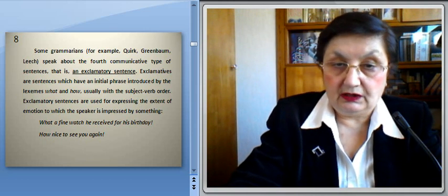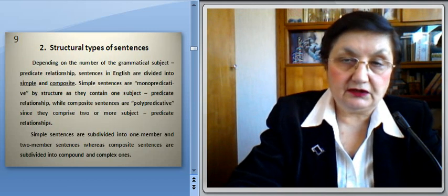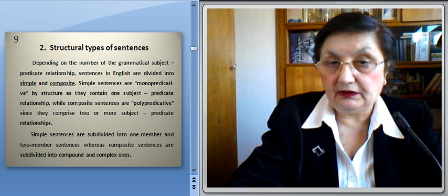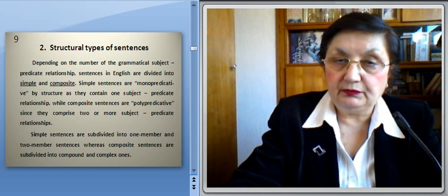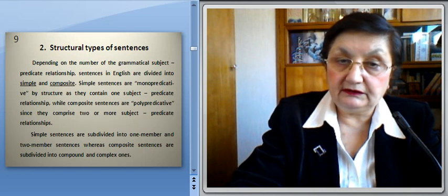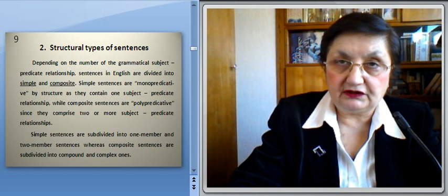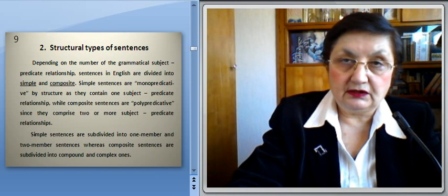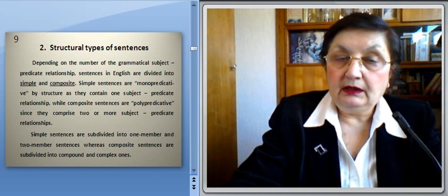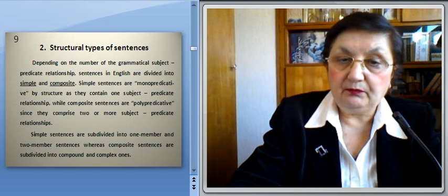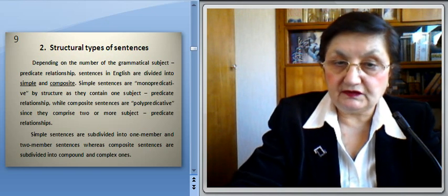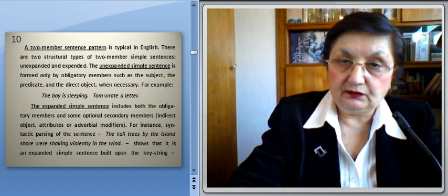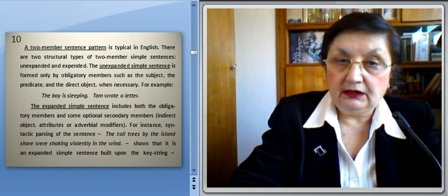Now we'll discuss structural types of sentences. Depending on the number of grammatical subject-predicate relationships, sentences in English are divided into simple and composite. Simple sentences are monopredicative by structure as they contain one subject-predicate relationship, while composite sentences are polypredicative since they comprise two or more subject-predicate relationships. Simple sentences are subdivided into one-member and two-member sentences, whereas composite sentences are subdivided into compound and complex ones. A two-member sentence pattern is typical in English.